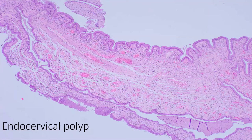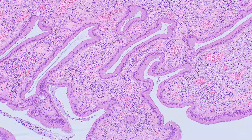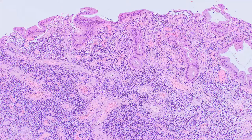One of the most common GYN pathology specimens is the endocervical polyp. It's polypoid in shape with very thick blood vessels. Under the microscope it appears very polypoid, lined by a single layer of cells with mucin in their cytoplasm and no atypia. Quite often it is inflamed, showing sheets of plasma cells with some lymphocytes and neutrophils.